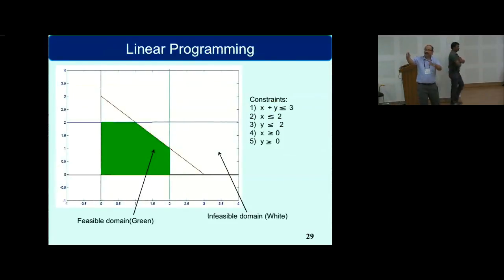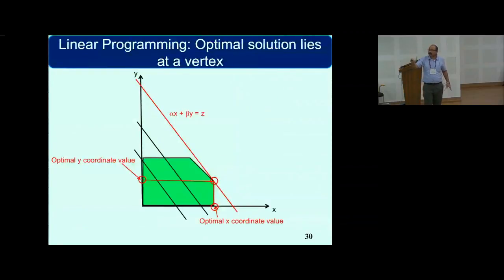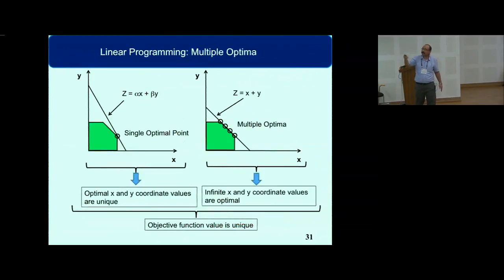This is a schematic. I have a set of linear constraints over here, and the green domain is the feasible domain, and the white domain is the infeasible domain. Here I have pointed out that if I have this line alpha x plus beta y equals z, I cannot go beyond this point because I hit the infeasible domain. This is a schematic showing the entire picture, that I have this objective function z equals alpha x plus beta y which I want to maximize. I can have either a single optimal point, or I can have multiple optimal points, which happens when the objective function slope coincides with the slope of one of the constraints.